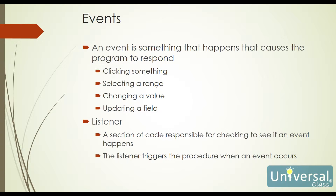An event is something that happens that causes the program to respond. This could be something like clicking on something, selecting a range, changing a value, or updating a field. This is done by a program in the background called a listener. The listener is a section of code or program that's responsible for checking to see if an event happens, and will then trigger a procedure to happen when the event occurs.